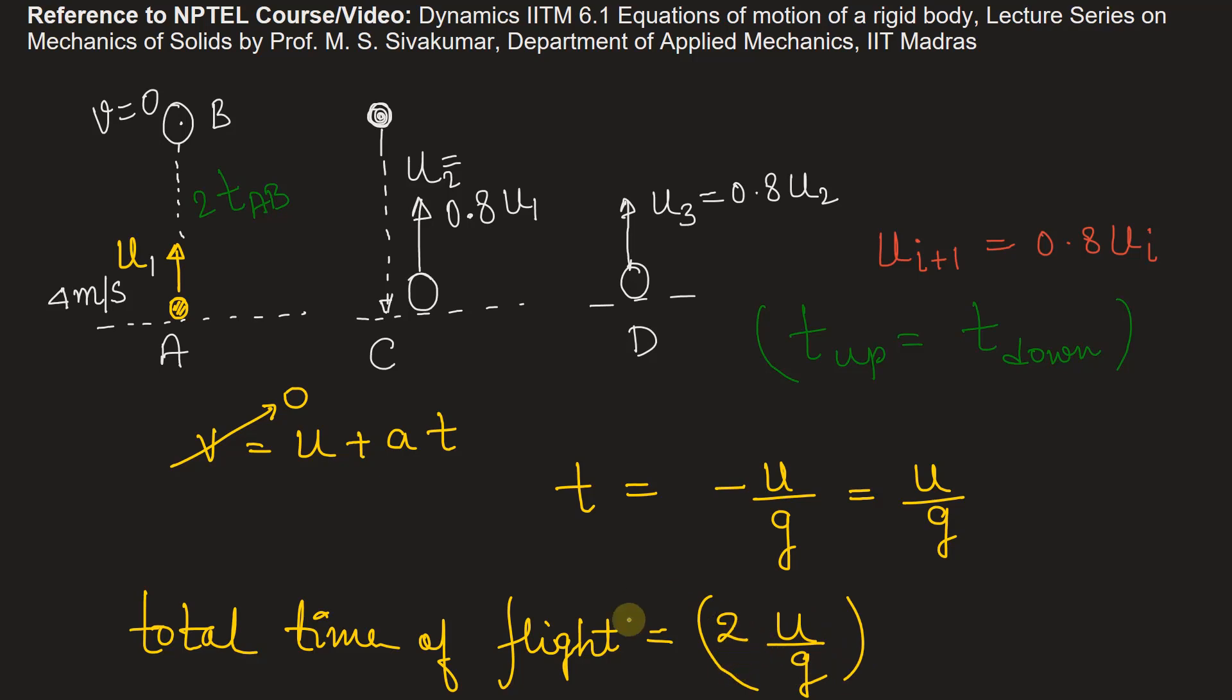So for first collision, let's say if this is time T_AB or if I say this is T1, time taken for this particle to go from point A to B and then return back to point A. So let's write this as T1, for first collision this much time it will take.